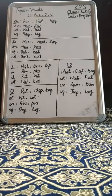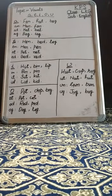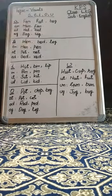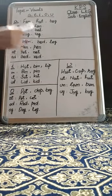Now let's learn a few combination sounds with the vowel A. First combination: -an. Its examples are Man and Fan. Second combination: -at. Its examples are Hat and Bat. Third combination: -ag. Its examples are Bag and Tag.